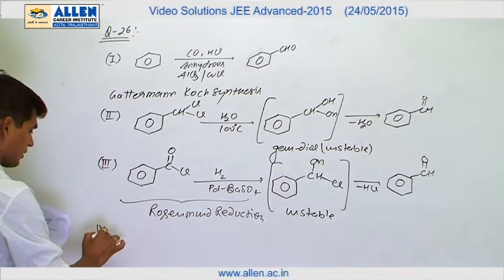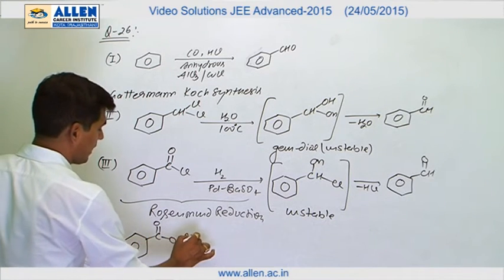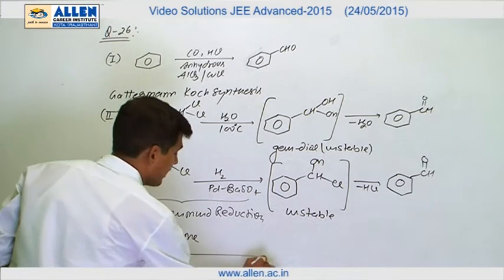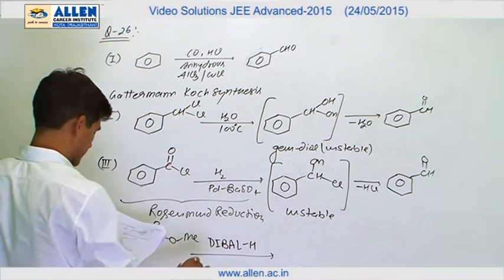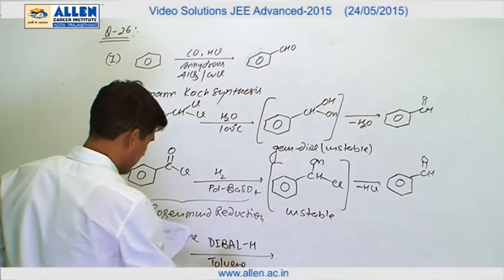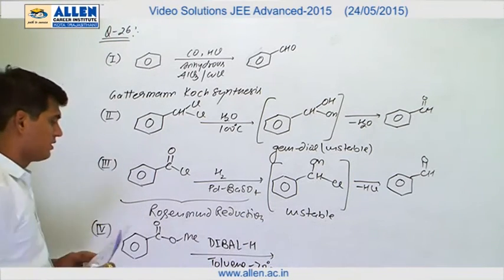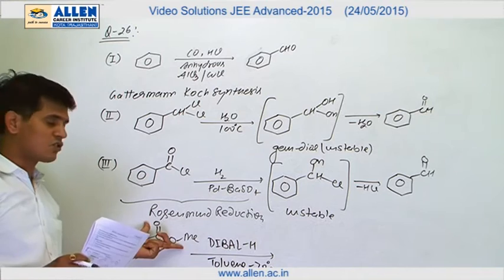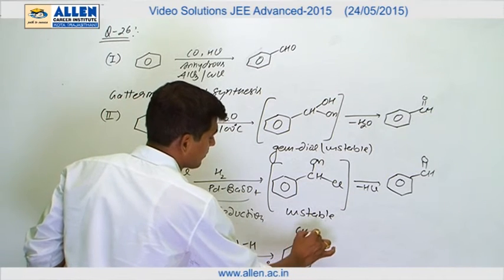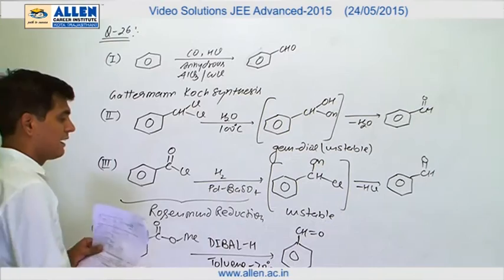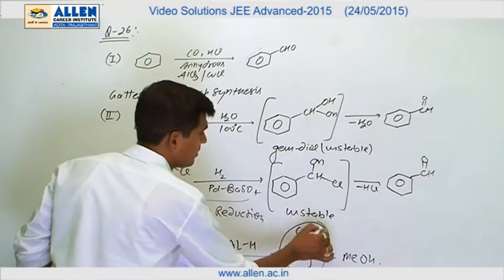Now the fourth reaction — we have a methyl ester using the reducing agent diisobutyl aluminum hydride (DIBAL-H) in toluene as a solvent at minus 78 degrees centigrade. DIBAL-H is a milder reducing agent which reduces the ester to benzaldehyde in a single step, producing benzaldehyde along with methyl alcohol. One of the products is again benzaldehyde.